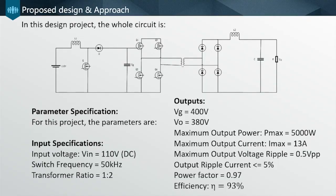Hello everyone, I'm Wenwen He. I'm going to introduce the proposed design and approach of our project. For the first stage of this circuit, we design an appropriate CCM boost PFC with a PID controller. We apply a method called hysteresis current control. The current reference generates an upper limit and a lower limit called the hysteretic band. When the current reaches the minimum value, the switch in the boost converter is turned on; when it reaches the maximum value, the switch is turned off. Two voltage sources are applied to the inductor — one fixed and one adjusted with high-frequency PWM duty ratio adjustment — to obtain the desired inductor currents.